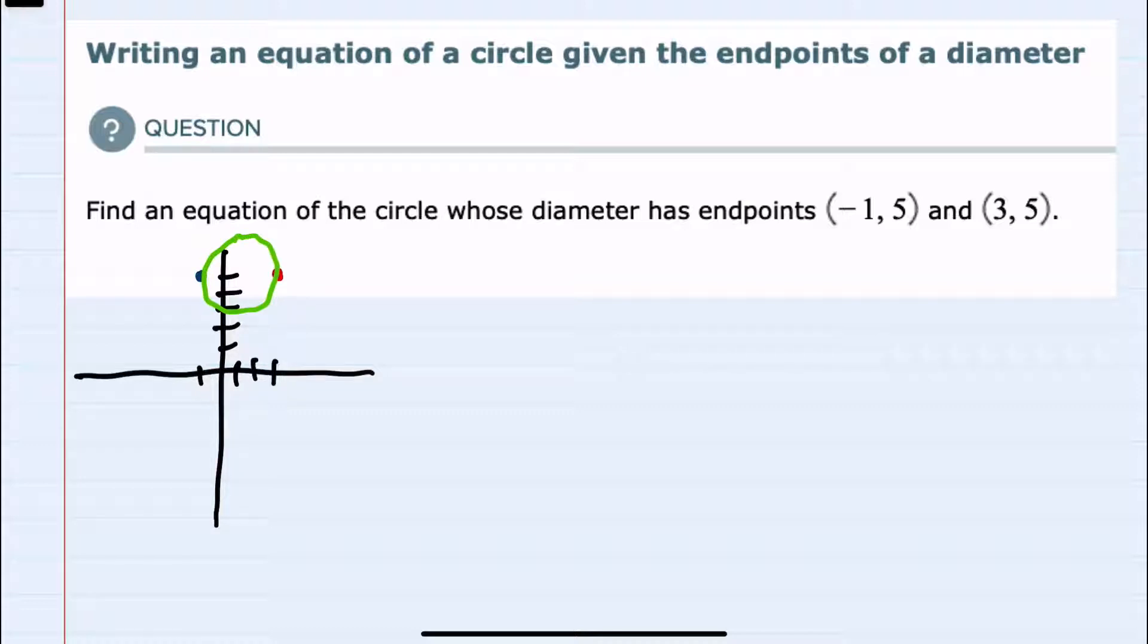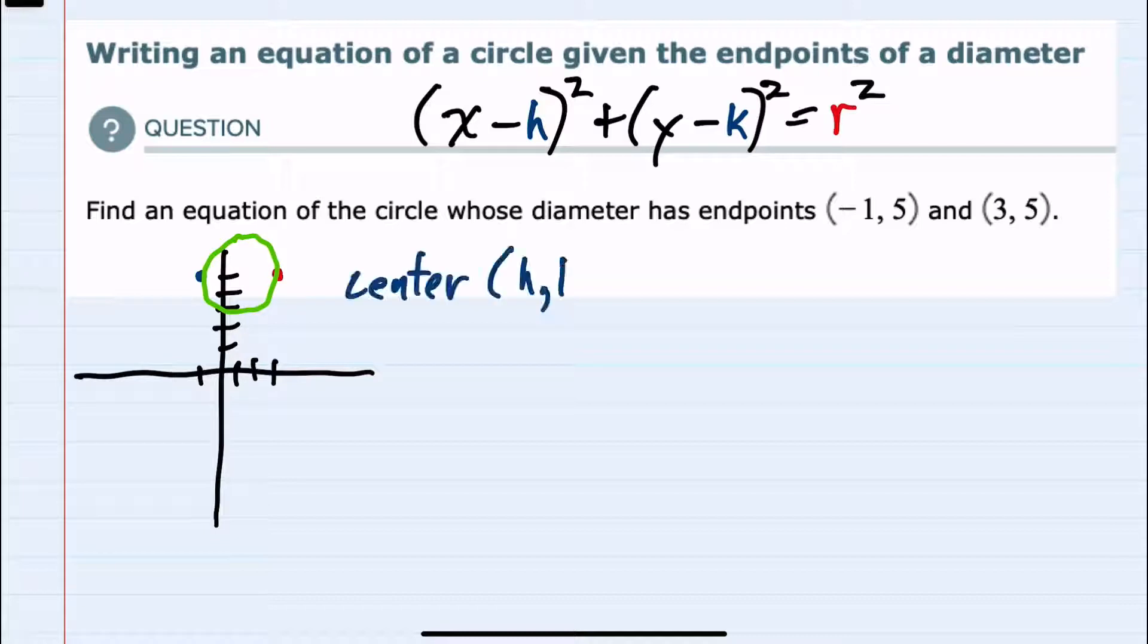To find the equation of the circle, which is (x - h)² + (y - k)² = r², we can see that we're going to need the center, which is our h and k, and we're going to need the radius, which is r.